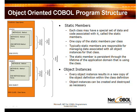Characteristics for an object instance are also pretty simple. Every object instance results in a brand new copy of the object definition within the class definition. Object instances can be created and destroyed as necessary. Now let's take a look at the diagram here.